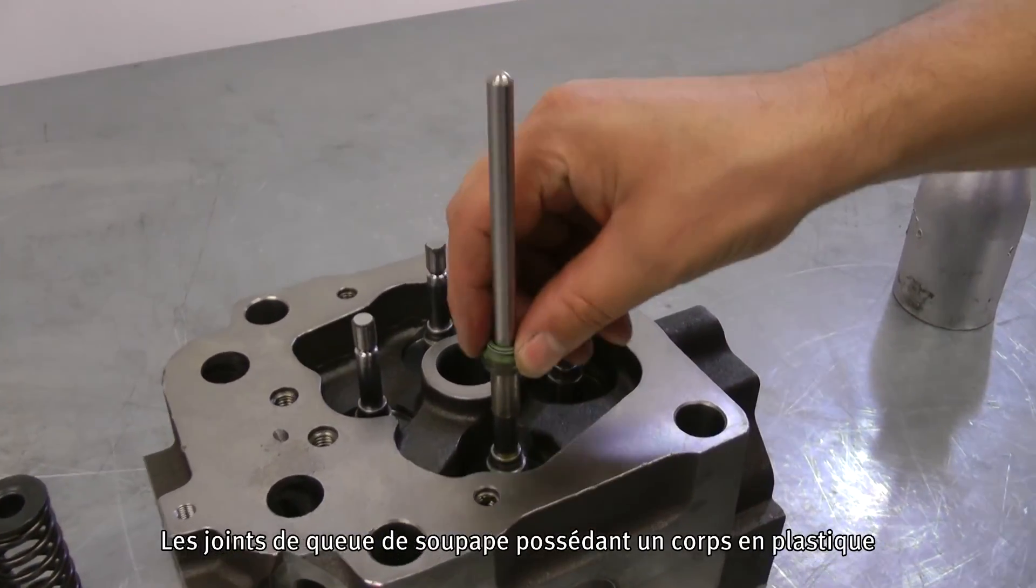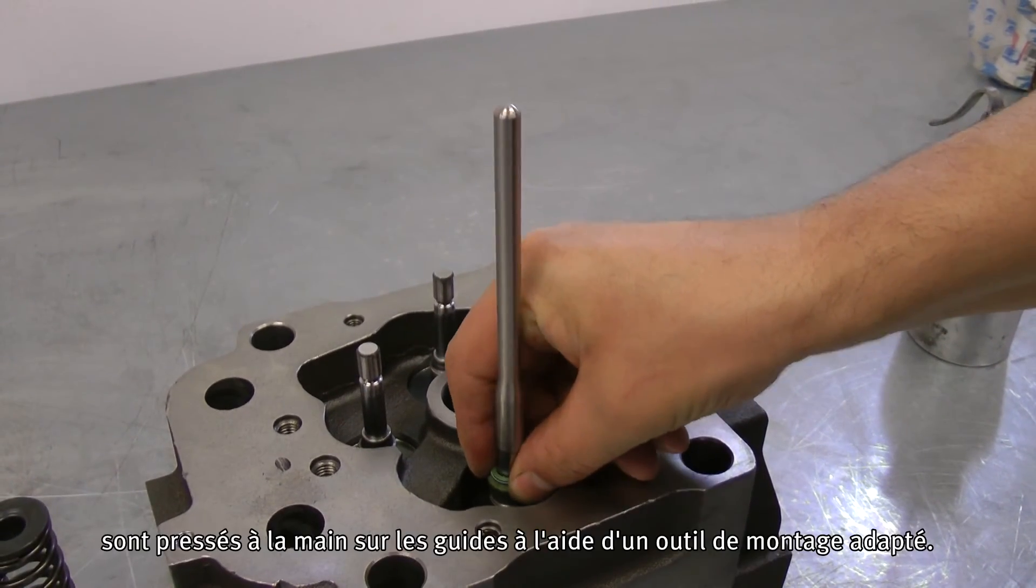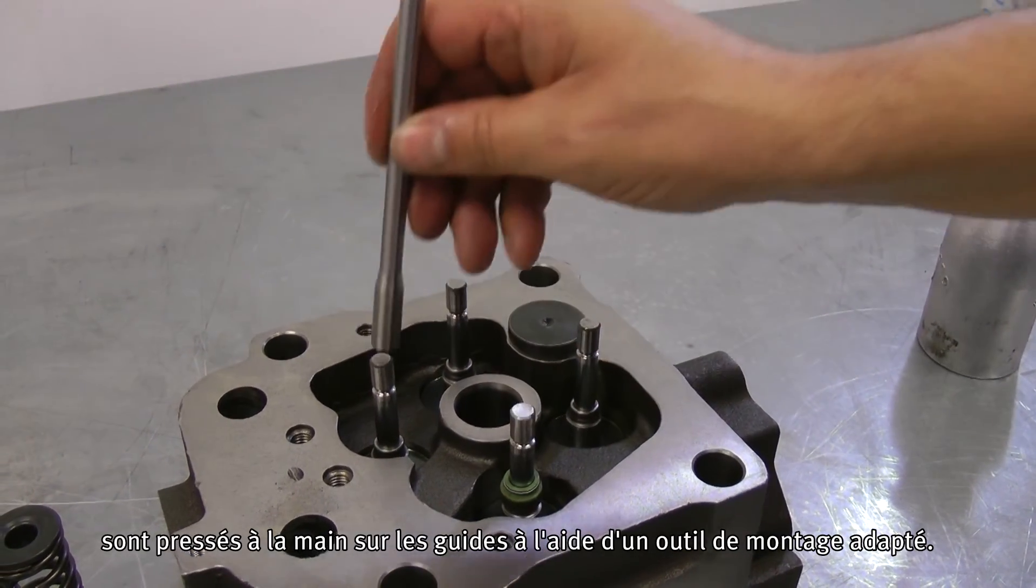Valve stem seals with a supporting body made of plastic are pressed onto the guides manually with a suitable assembly tool.